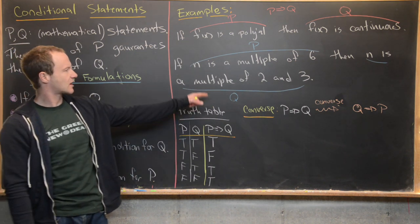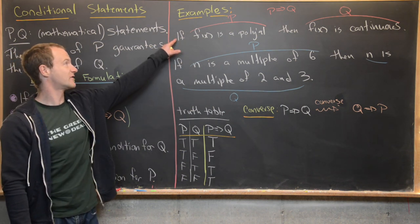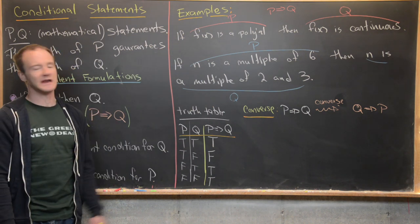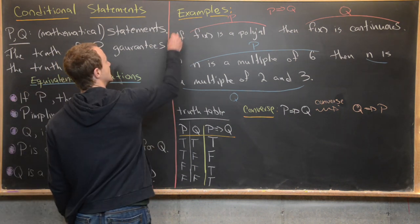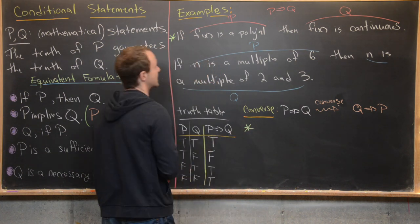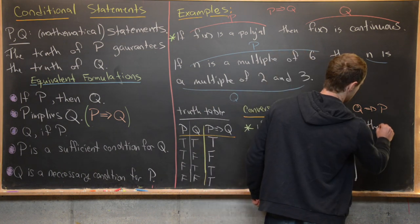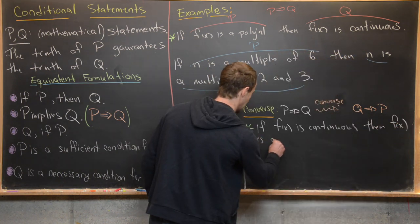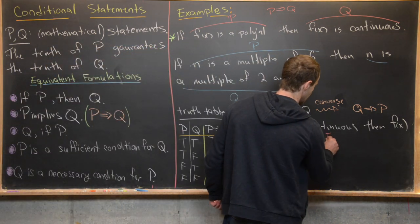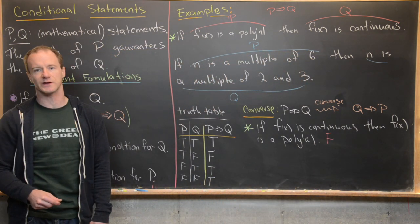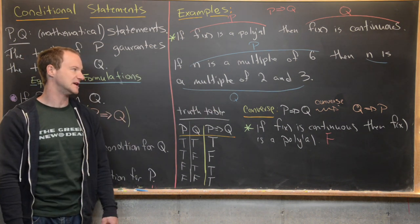Let's think about the converses of our two statements. The first: 'if f(x) is a polynomial, then f(x) is continuous' is definitely true. But its converse — 'if f(x) is continuous, then f(x) is a polynomial' — is not true. There are many continuous functions that are not polynomials. So while P implies Q is true, the converse Q implies P is not true.